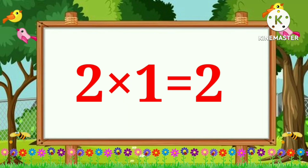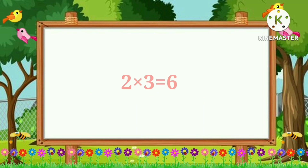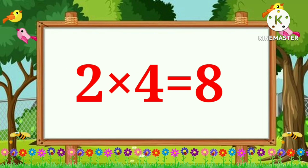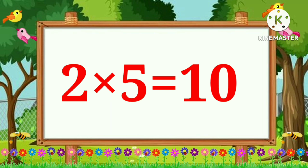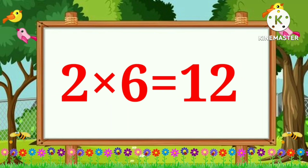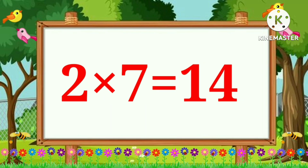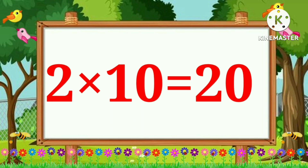Table of Two. Two ones are two. Two twos are four. Two threes are six. Two fours are eight. Two fives are ten. Two sixes are twelve. Two sevens are fourteen. Two eights are sixteen. Two nines are eighteen. Two tens are twenty.